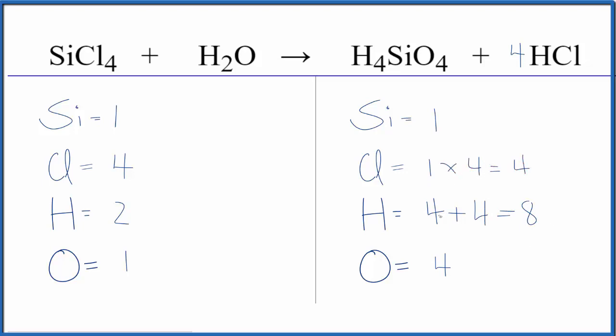It looks like we could balance the hydrogens now. We could put a four here in front of the H2O since we have an even number here now. So two times four, that would give us eight hydrogens, and then one times the four, that gives us our four oxygens, and we're done.